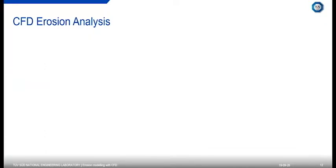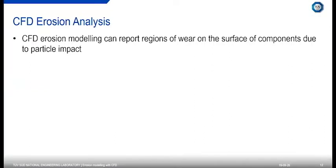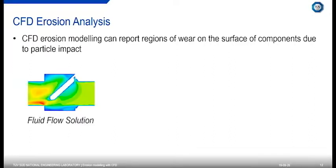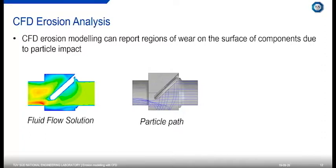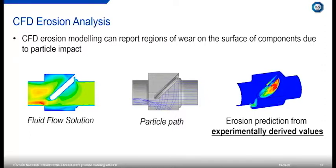How do we do this with erosion? CFD erosion modelling can report regions of wear on the surface of components due to particle impact. We take a similar approach — we've got our fluid flow solution, then we define the size of particles and their flow rate into the model and predict where they go. Do they hit the wall? Do they follow the flow? From that, we can give a prediction of the wear on the surface. The majority of the time these are experimentally derived values, which is why we typically have a coupled approach using testing and CFD analysis to get the best understanding.